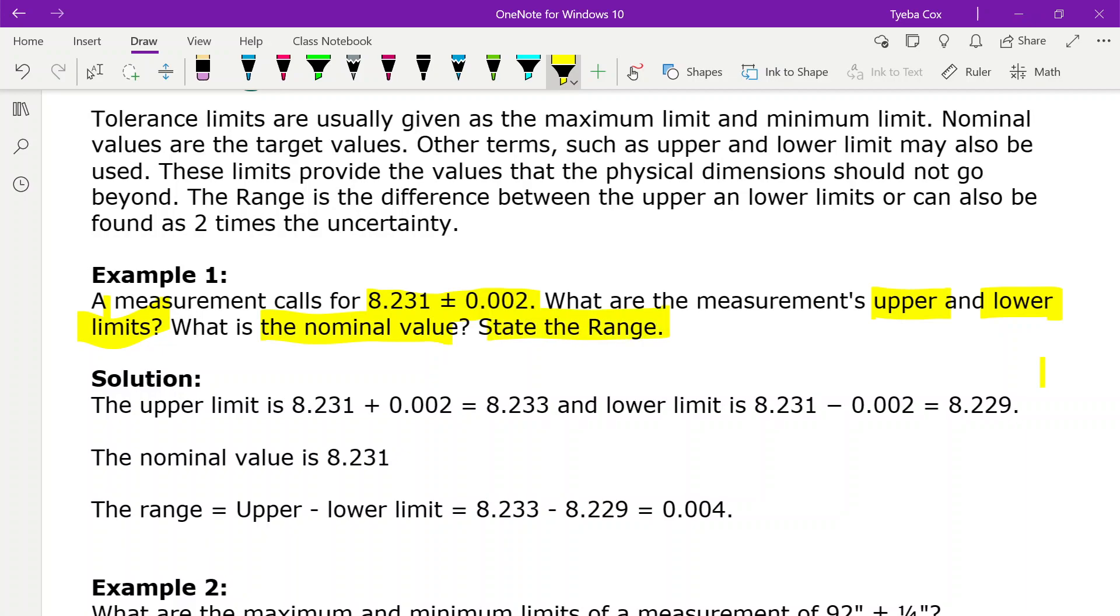So the upper limit is found by adding the 0.002 and the lower limit is found by subtracting the 0.002 from your 8.231 in each case. So here we get the upper limit as 8.233 and the lower limit as 8.229. Now the nominal value is our target value, so we want to end up with a measurement that is 8.231.